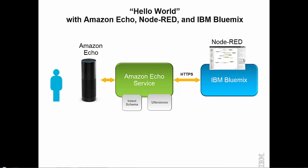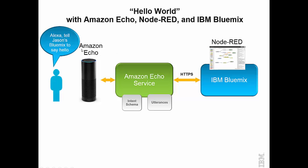Let me take a minute to show you how this is going to work. I'm going to first talk to my Echo, invoke my skill which is called Jason's Bluemix, and tell that skill to say hello. What the Amazon Echo service does is it handles the speech recognition part using something called an intent schema and utterances.